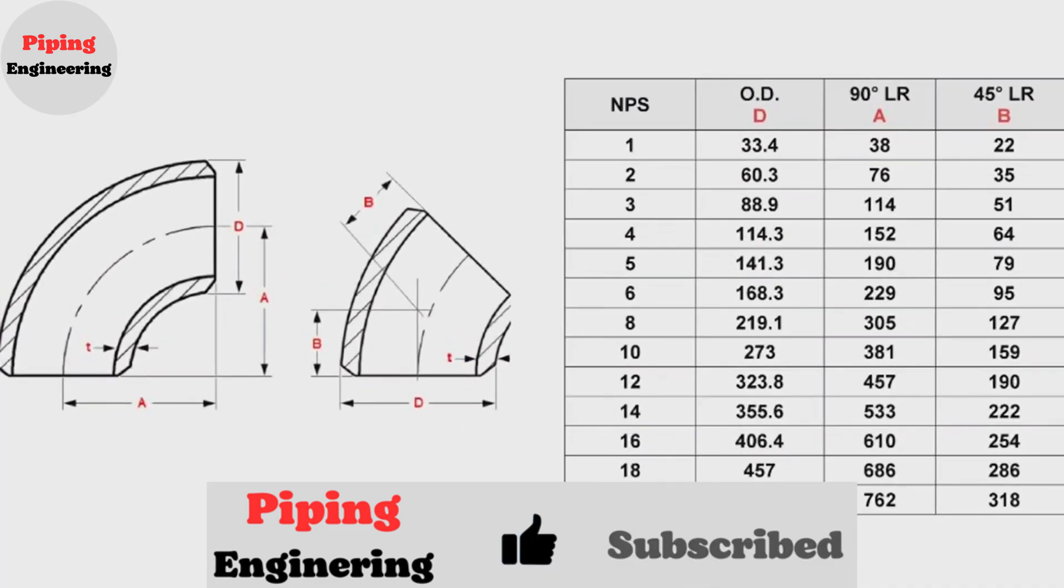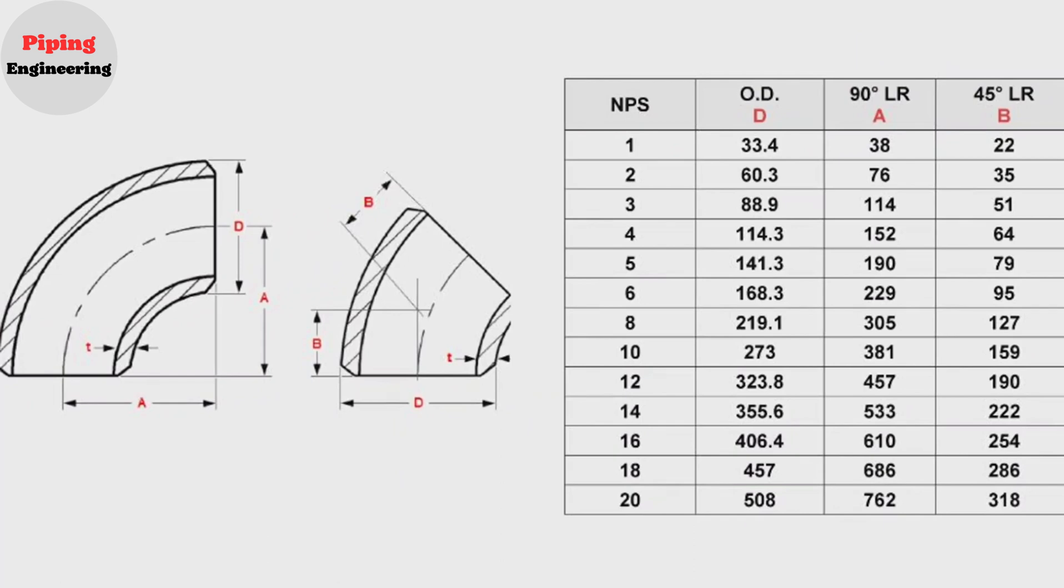Let's look at the dimensions of the elbows with a long radius. The dimensions of the elbows mean the distance from the center of one arm of the elbow to the end of the other arm.